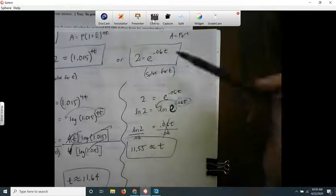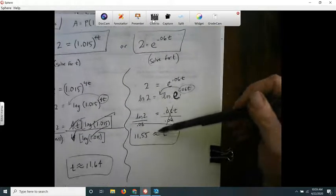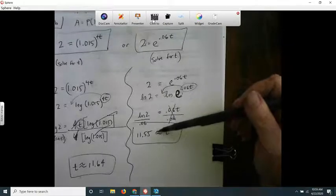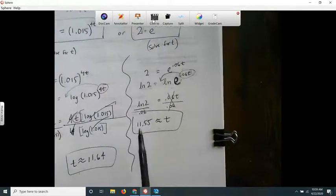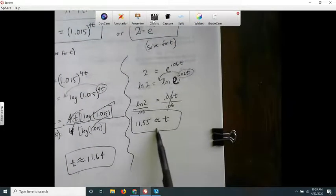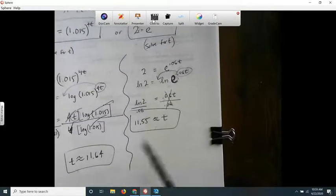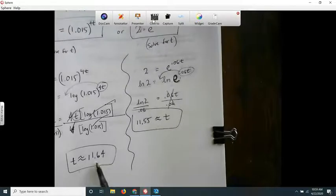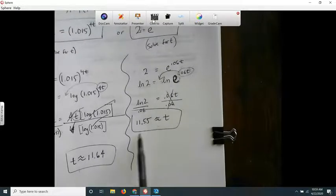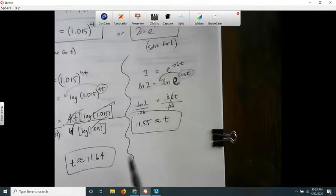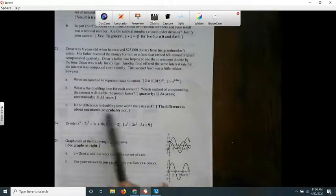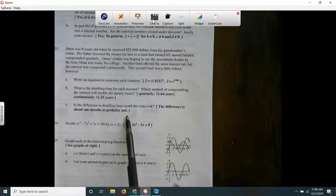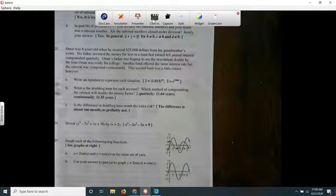It was riskier though, so maybe it's not worth it because it's not that much faster. This is 11.64 years and this is 11.55 years—probably doesn't make a difference. The answer key says the difference is only about a month, so it probably isn't worth the risk.